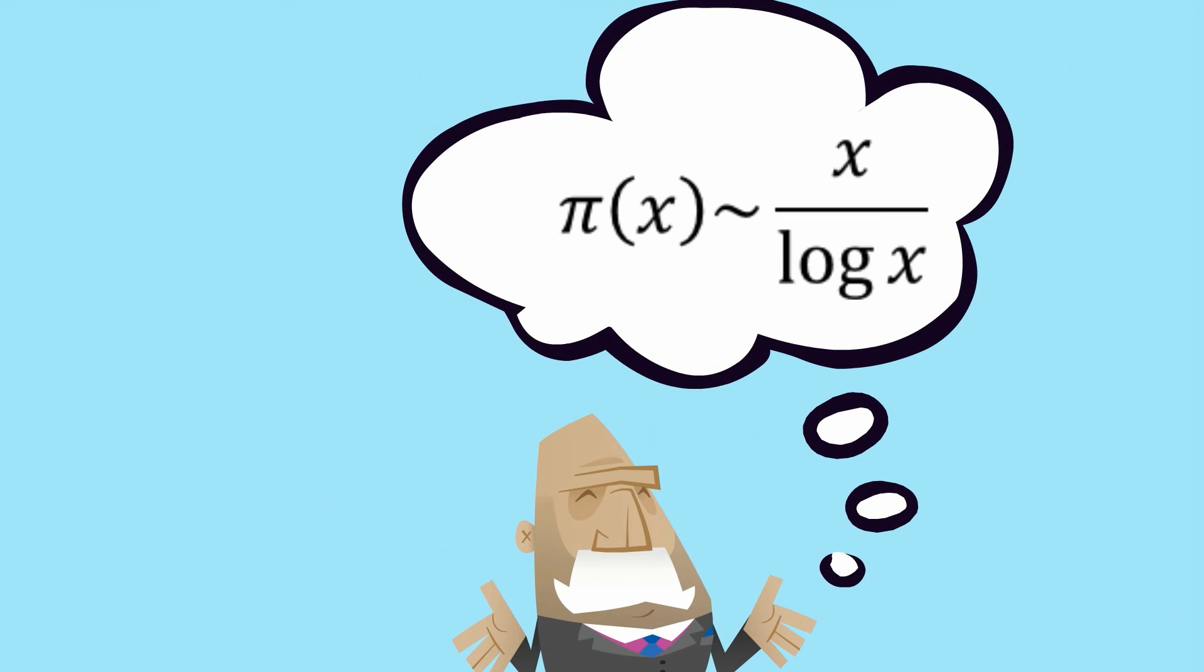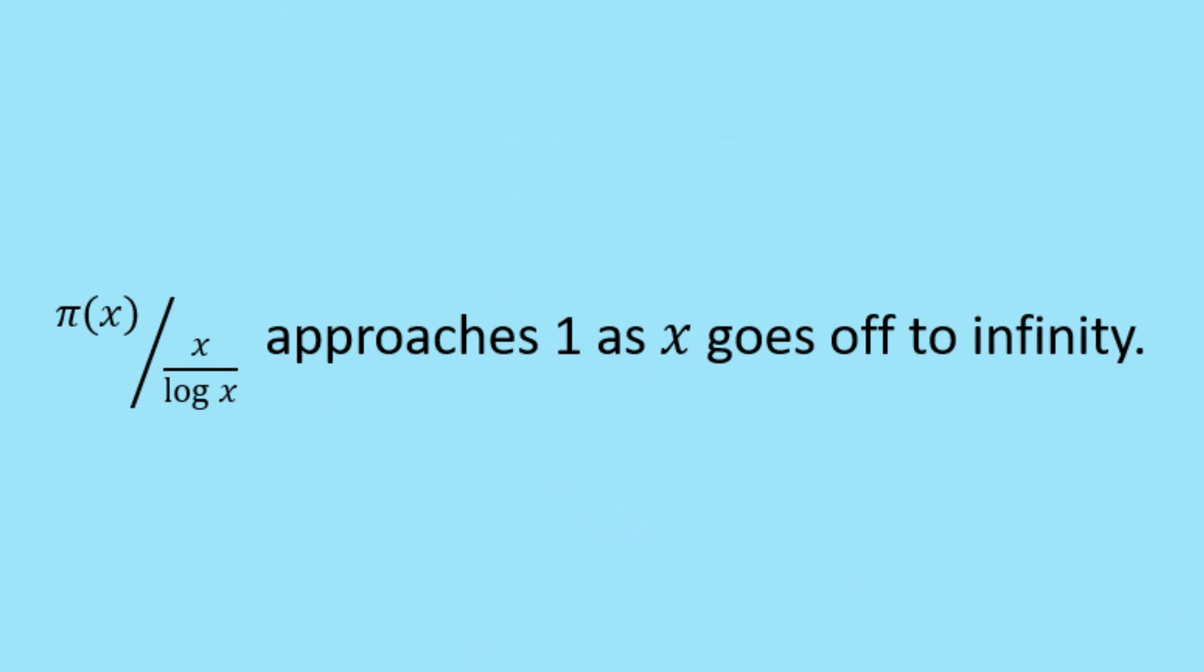So the prime number theorem is a proof that, in fact, π(x) divided by x over log x approaches 1 as x goes off to infinity.